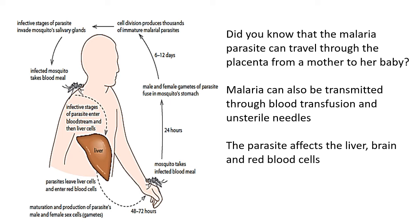The malaria parasite can also travel from the placenta of a mother to a baby, making it very dangerous for newborns whose immune systems cannot fight it off. Malaria can also be transmitted through blood transfusion or through the use of non-sterile needles — which is why doctors always use a new, clean needle for each patient, as many infections can survive on old needles.